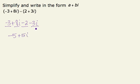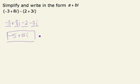Negative 5 plus 5i is in the form a plus bi. Therefore, that is my final answer.